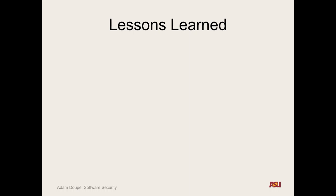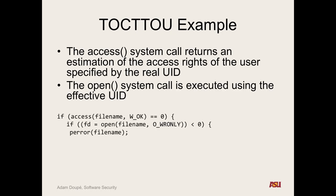So what is the problem with using the file name? It's a string that the operating system has to parse and go through and access every file. When we call open, what does the open method return to us? A file descriptor. What if we use versions of access that operate on a file descriptor? Is that going to solve our problem?